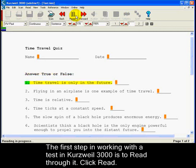Answer true or false. 1. Time travel is only in the future. 2. Flying in an airplane is one example of time travel. 3. Time is relative. 4. Time ticks at a constant speed.